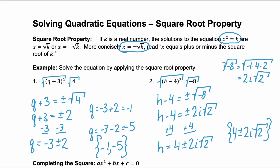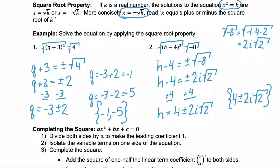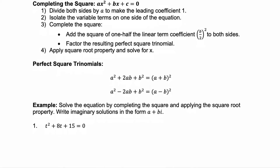And we just put it in a solution set. Now along with using the square root property comes completing the square. When you use completing the square, you're taking a trinomial that you can't factor and you're turning it into a perfect square trinomial, like these right here.